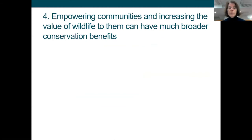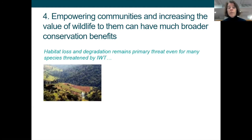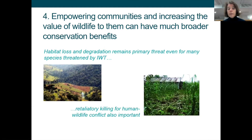Many of those case studies in the People Not Poaching database are examples of communities engaged in and supporting formal law enforcement efforts through community ranger patrols and so on. If we empower communities and increase the value of wildlife to them, it can have much broader conservation benefits beyond just tackling illegal wildlife trade. The biggest threat to wildlife is habitat loss and degradation, far more so than illegal wildlife trade. Another big threat is retaliatory killing from human-wildlife conflict, which for some species can account for far more deaths than illegal wildlife trade.